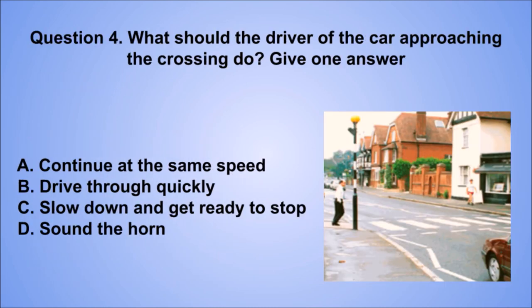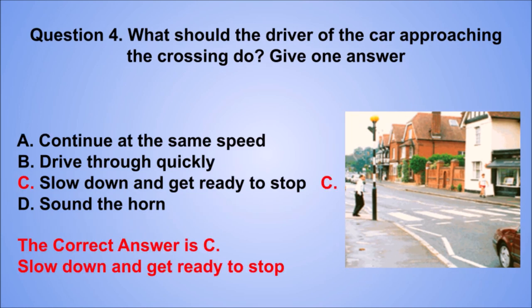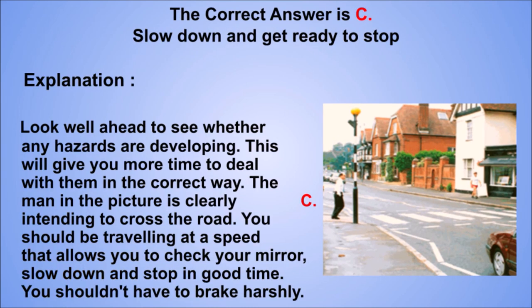Question 4. What should the driver of the car approaching the crossing do? Give one answer. A. Continue at the same speed. B. Drive through quickly. C. Slow down and get ready to stop. D. Sound a horn. The correct answer is C, slow down and get ready to stop. Look well ahead to see whether any hazards are developing. The man in the picture is clearly intending to cross the road. You should be traveling at a speed that allows you to check your mirror, slow down and stop in good time. You shouldn't have to brake harshly.